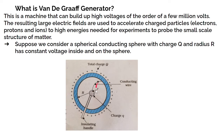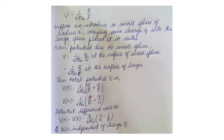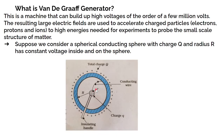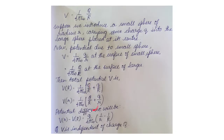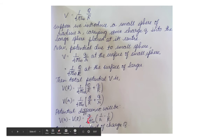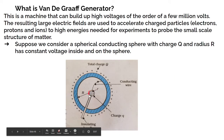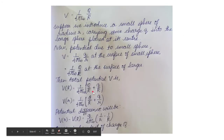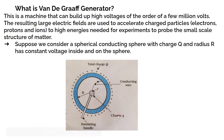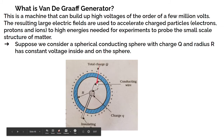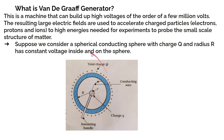The potential on the surface of the small sphere equals (1/4πε₀) × (Q/R + q/r). Since r is less than R, the term q/r is greater than Q/R, so the small sphere is at a higher potential than the large sphere. This potential difference depends on q and r.